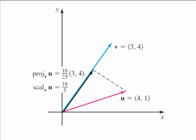As a reminder, the projection of u onto v is a vector pointing either in the direction of v or in the negative direction of v, and the scalar component is really just its length. Take care, and I will see you in 12.4.